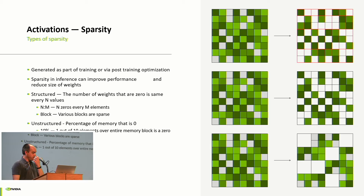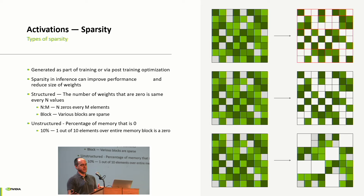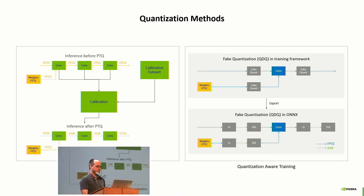Another way of doing almost the same with less is sparsity. Whereas activations are normally reduced through quantization, you can reduce your weights through sparsity. There are two types: structured and unstructured. Structured sparsity includes NM sparsity — for every M values, N of them will be zero — and block sparsity, where if a sub-matrix doesn't pass a threshold, the whole thing is zeroed. With unstructured sparsity, you set a threshold and everything below it is marked as zero, for example 50% of all values.